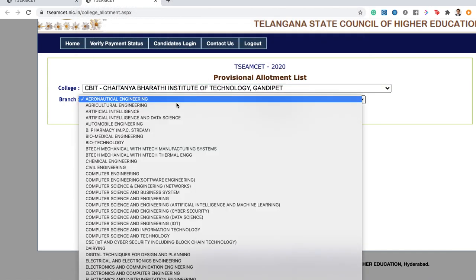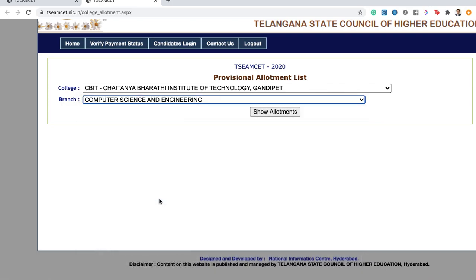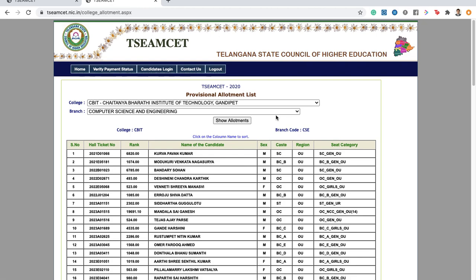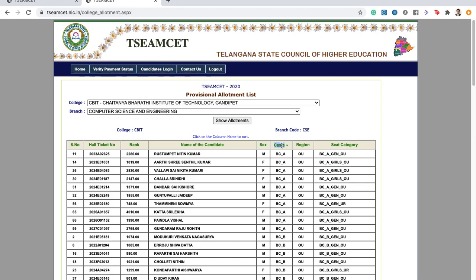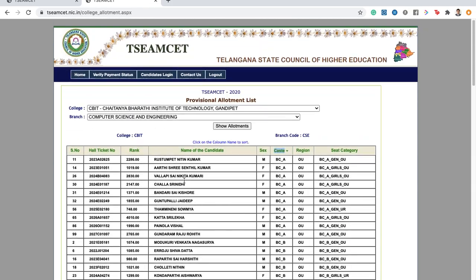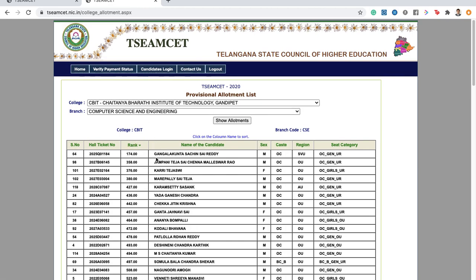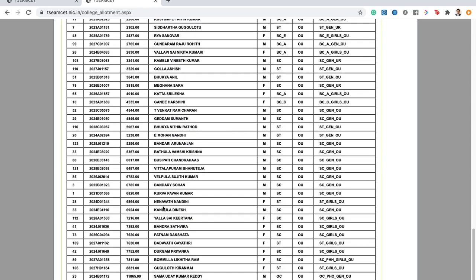And let us say, you were looking for computer science engineering branch. So, there you can click on look at allotments. And then, here you can see, you can also sort it by caste. So, if you click on this, you can sort it by caste. And let us say, you are a general category student and you want to see the cutoff. So, this is how the rank. So, you can check the rank and you can see where computer science cutoff for a general category stopped.